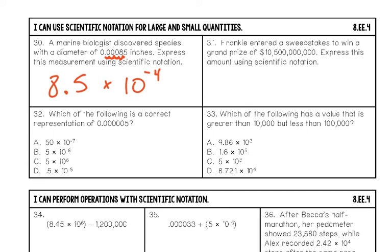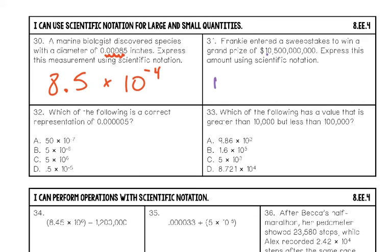Number thirty-one: Frankie entered a sweepstakes for a grand prize of a very large number. Express in scientific notation by placing the decimal between the first two digits: 1.05 — don't forget the five, it is significant. Count the places moved: ten times. Final answer: 1.05 times 10 to the tenth power.